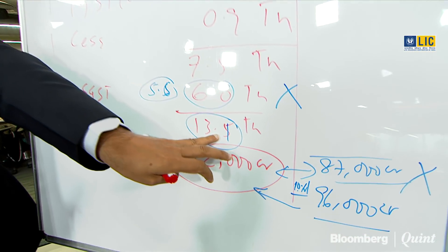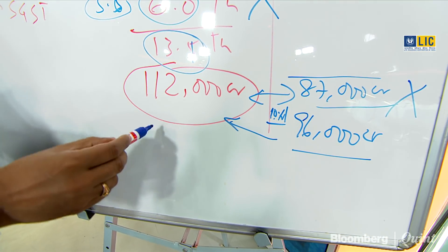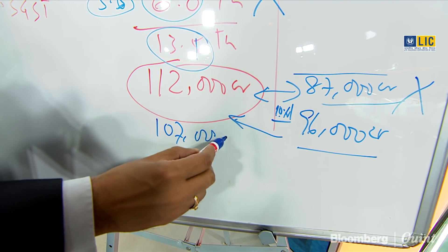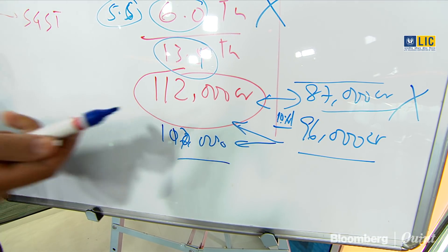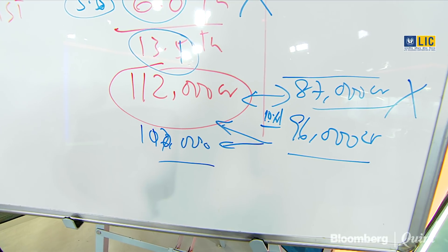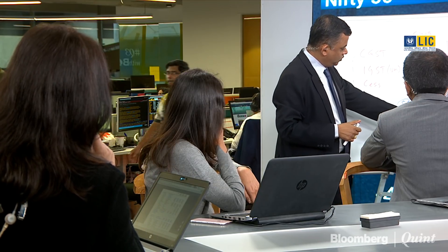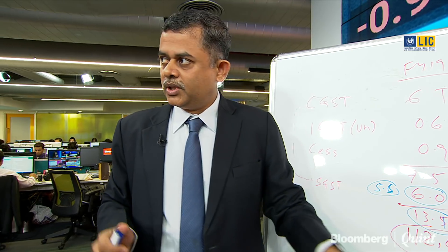The moment you drop the total to about 13.1 trillion, you're talking about an ask rate of around 1,07,000 to 1,10,000 crores for FY19. On a base of 96,000 crores for FY18, that suggests growth of about 13-14%. When we did the numbers properly with decimals, it actually came to about 11.5% growth — which is absolutely in line with nominal GDP growth.